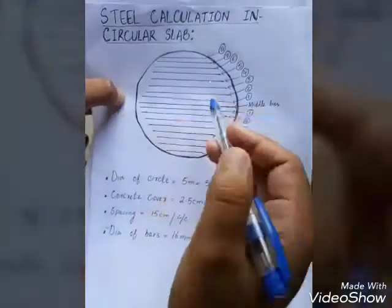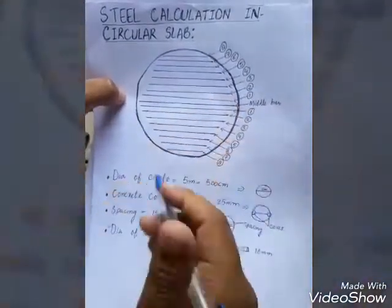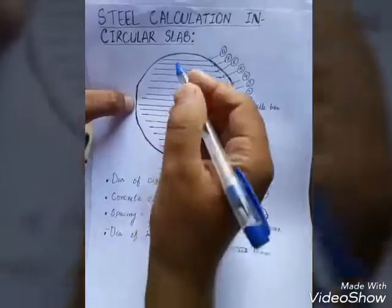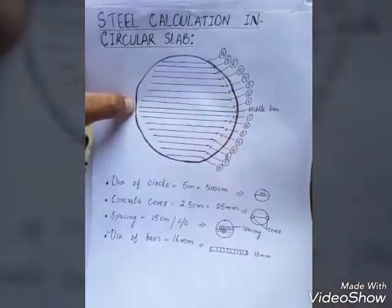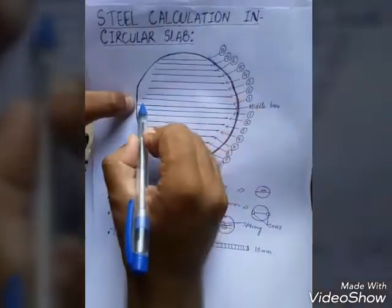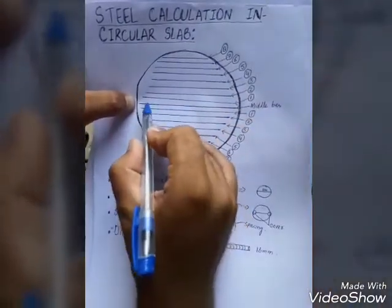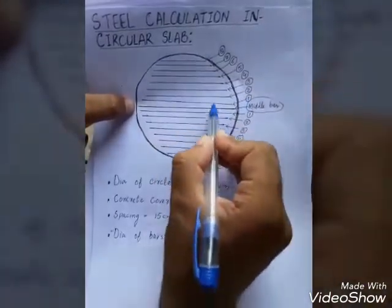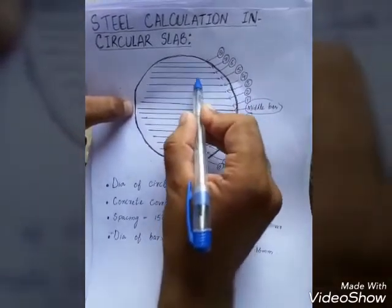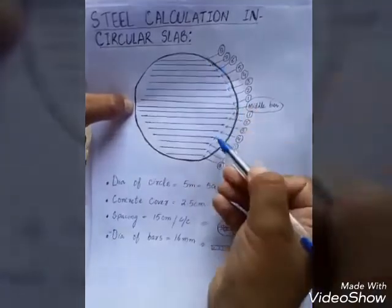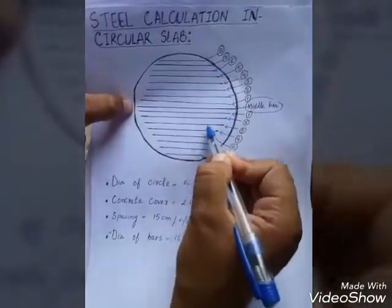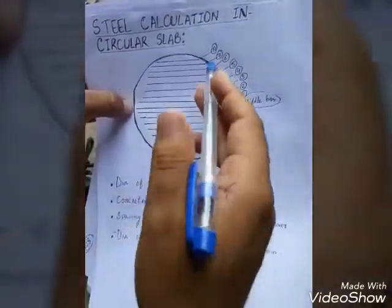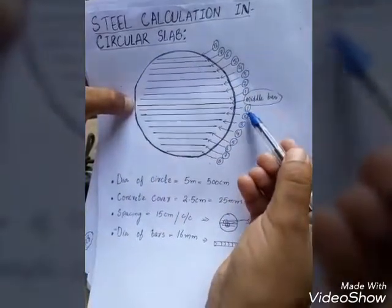Here we will find the steel of this circular slab. I have made this already. This is my circular slab and these are my bars. This is my middle bar, and then first bar, second bar, third bar, fourth bar, fifth bar, sixth, seventh, and eighth bar. Similarly on the other side: first bar, second bar, third bar, fourth bar, fifth bar, sixth, seventh, eighth bar.